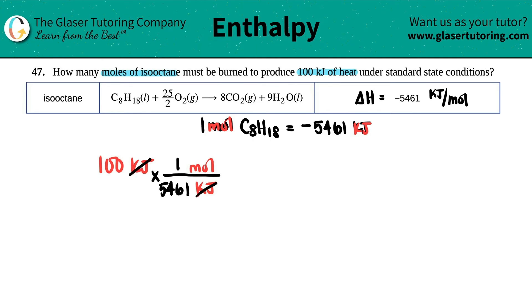Now I'm just going to cancel out the kilojoules. And let's just do this math. 100 divided by 5,461.